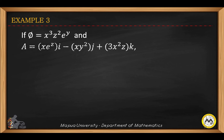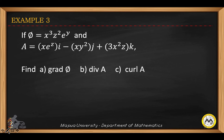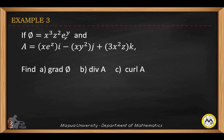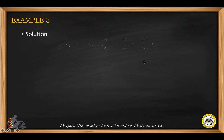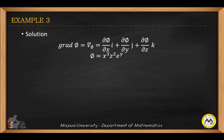You're given the function phi and vector a with the following components, and we find the following operations, starting with the gradient of phi. So phi equals x cubed times z squared times e to the y.